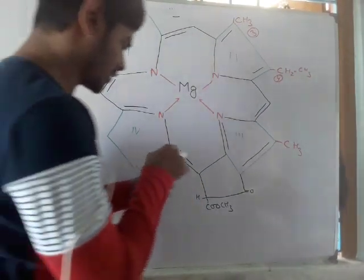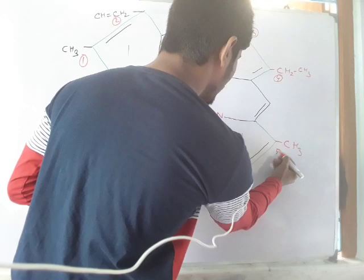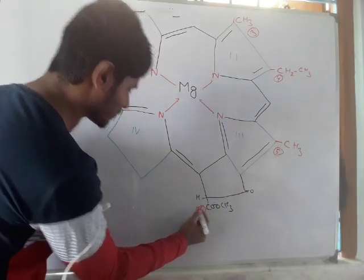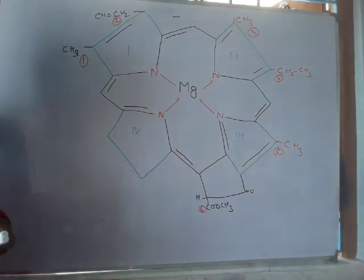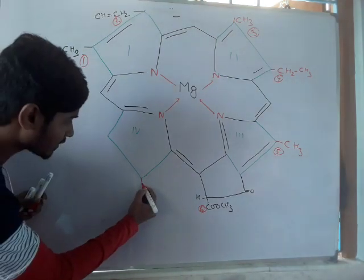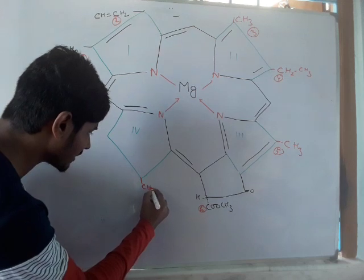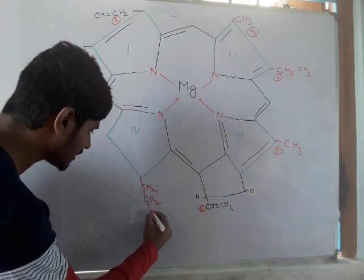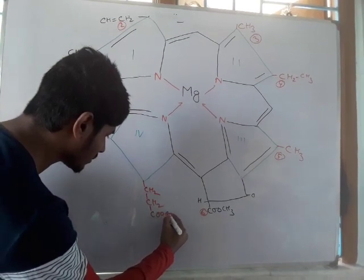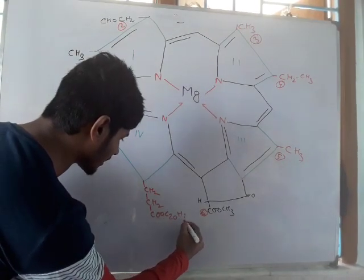After that, you have to draw the seventh group, that is CH2, CH2, COO, C20H39. And this is called the phytol ring structure.